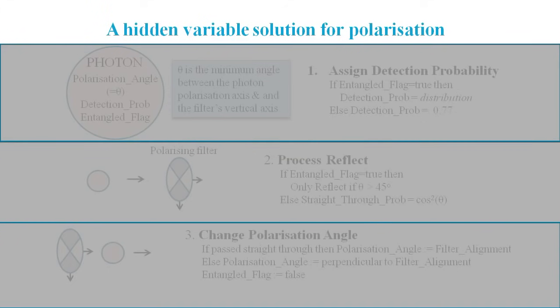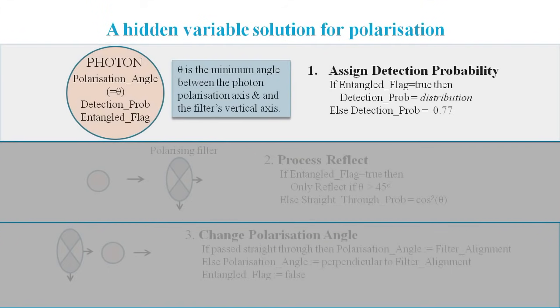Now we can unveil our hidden variable solution. Each photon has three hidden variables: a polarization angle, a detection probability, and an entangled flag. When the photon reaches the filter, its detection probability is assigned a value. A different process is used if the photon is entangled.